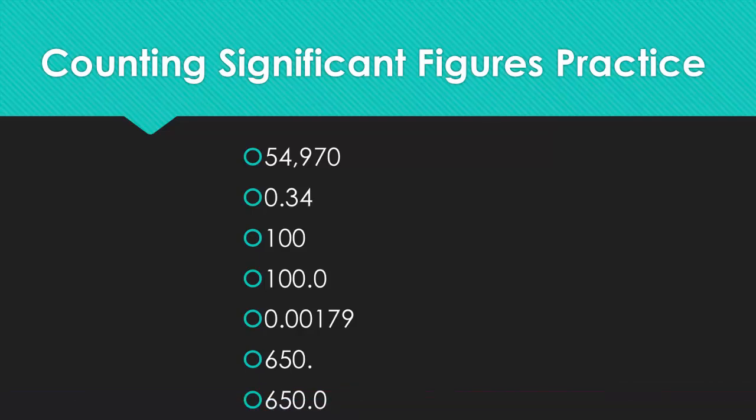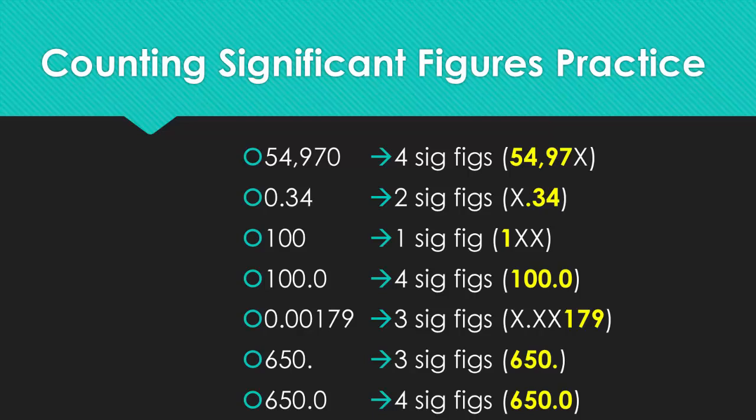I want you guys to pause this video right now and try to do these numbers on your own. When you're doing these calculations, make sure you're following the four rules that we gave you before. As you notice in the first one, that last zero does not count. In the second one, the very first zero before the decimal does not count either. For the third one, the number 100 without a decimal has only one sig fig, but there are four sig figs in the fourth one because of the decimal. In the fifth bullet down, there are only three significant figures. In the second to last one, because of that decimal, that is exactly 650, so there are three sig figs. And for the very last one, there are four sig figs because of the decimal place.